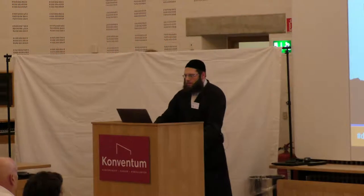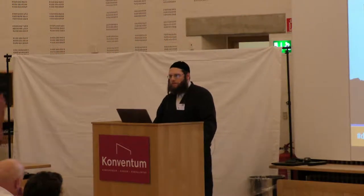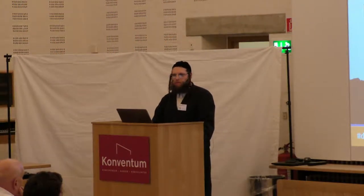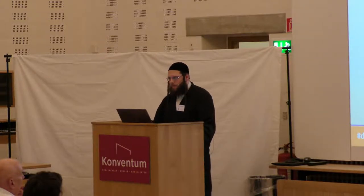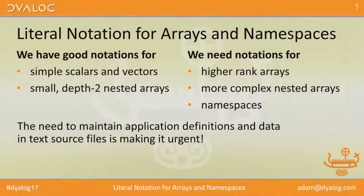Array Manipulation. We have this amazing Array Manipulation language, and we have really good notation for scalars and vectors, and even smaller vectors of vectors, or other simple nesting. But what we don't have is notation for rank. Even though APL is so matrix and higher-rank array oriented, we don't even have a way to write a higher-rank array.